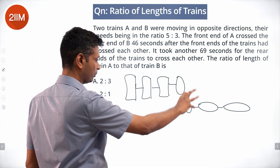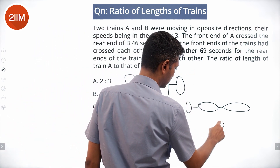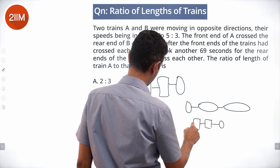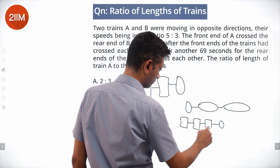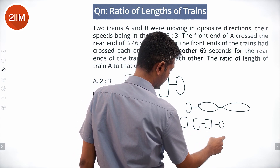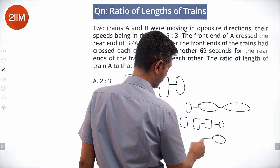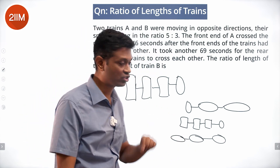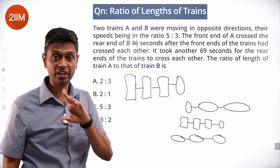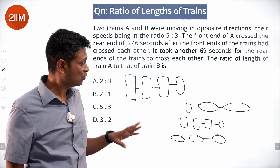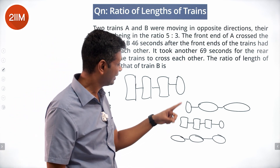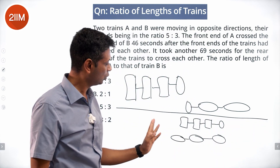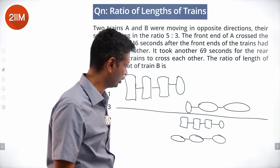So the front end crosses over to the rear end — we go from this state to some other position. From this state to this state it takes 46 seconds — that is, from front-to-front to the front end crossing the rear end.